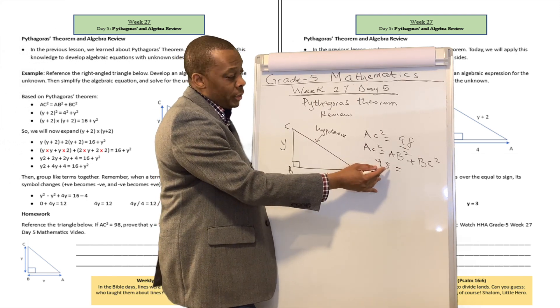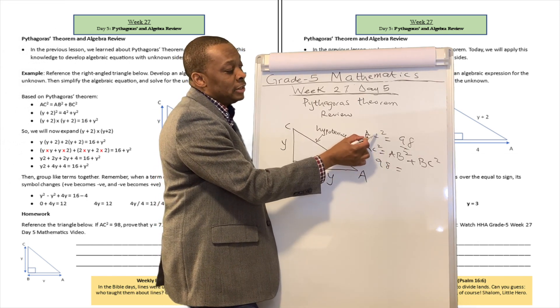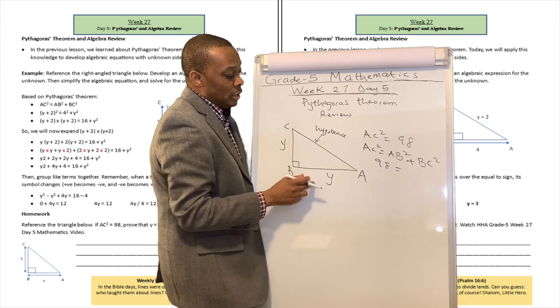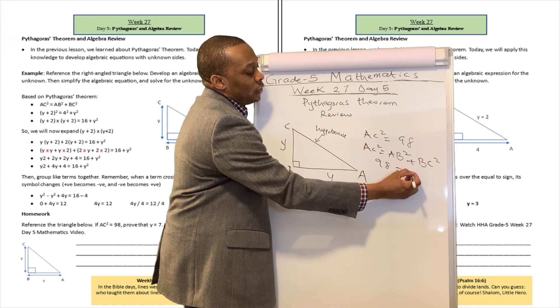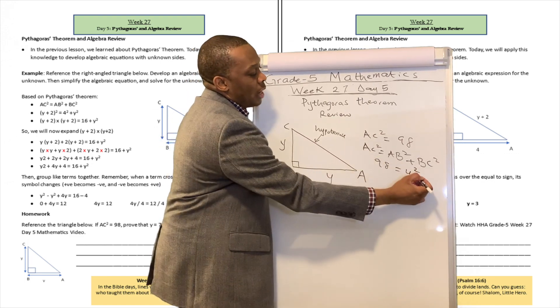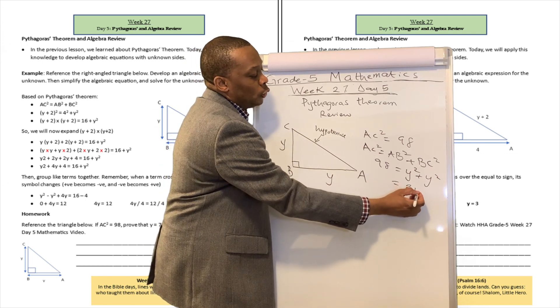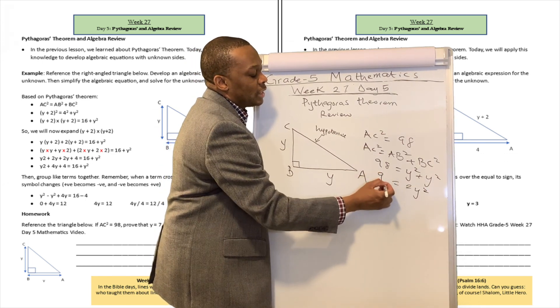Remember, we're not going to say 98 squared anymore because they told us AC squared is 98. So 98 is going to be equivalent to Y squared plus Y squared. This is going to be 2Y squared equals 98.